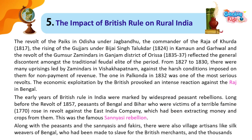The revolt of the Paikas in Odisha under Jagabandhu, the commander of the Raja of Khurda (1817), the rising of the Gujjars under Vijay Singh Talukdar (1824) in Kumaon and Garhwal, and the revolt of the Gumsur zamindars in the Ganjam district of Odisha (1835–37), reflected the general discontent amongst the traditional feudal elite. From 1827 to 1830, there were many uprisings led by zamindars in Visakhapatnam against the harsh conditions imposed on them for non-payment of revenue. The revolt in Palkonda in 1832 was one of the most serious.